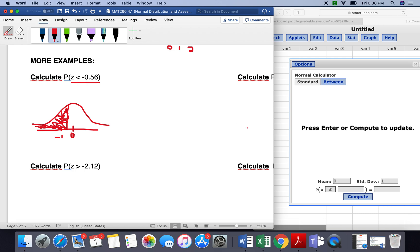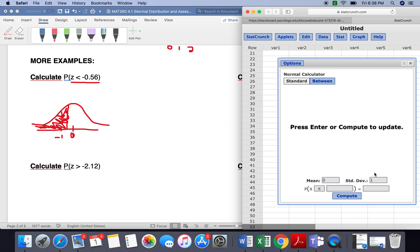So I'm going to go over to StatCrunch, and we already have the mean and the standard deviation, which will be 0 and 1 for our standard normal. And we have less than, so we're going to go ahead and put the negative 0.56 here, and we're going to compute it.